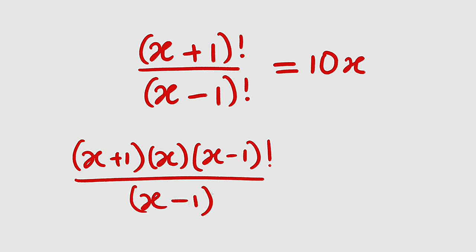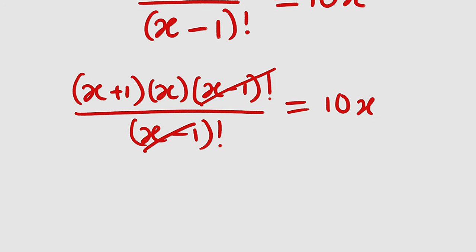Divided by (x-1)! this is equal to 10x. You can see that this can now cancel with this because our denominator cannot equal 0. What we have at the top is just (x+1) times x.